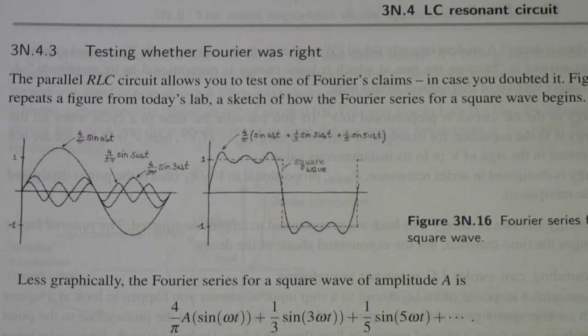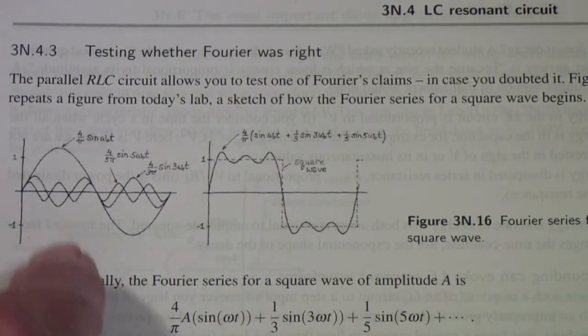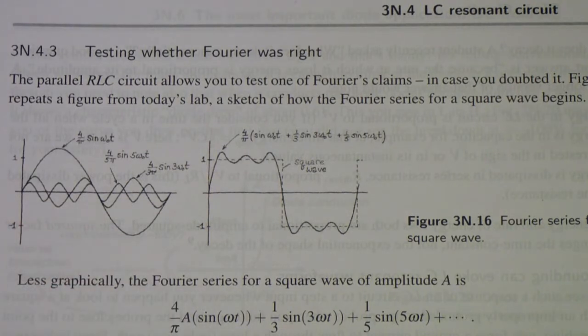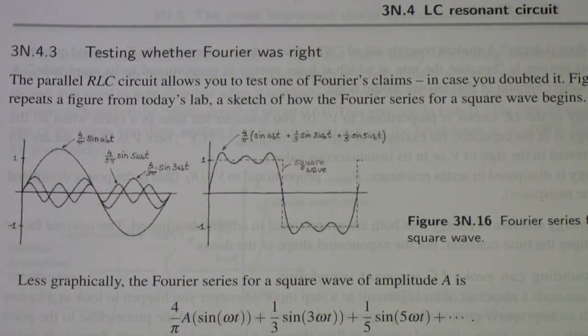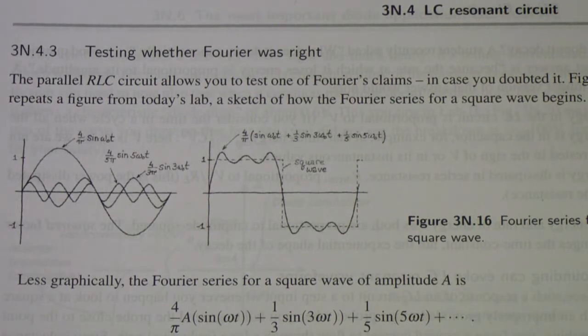The purpose of this setup is to apply a square wave to the resonant circuit and observe the transient response, which is called ringing. In section 3N.4.3 they ask the question 'testing whether Fourier was right,' and pose an interesting question in the book.